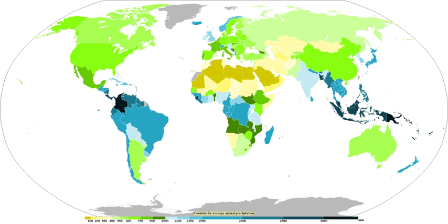The dew point is the temperature to which a parcel must be cooled in order to become saturated and condenses to water. Water vapor normally begins to condense on condensation nuclei such as dust, ice, and salt in order to form clouds. An elevated portion of a frontal zone forces broad areas of lift, which form cloud decks such as altostratus or cirrostratus. Stratus is a stable cloud deck which tends to form when a cool, stable air mass is trapped underneath a warm air mass.